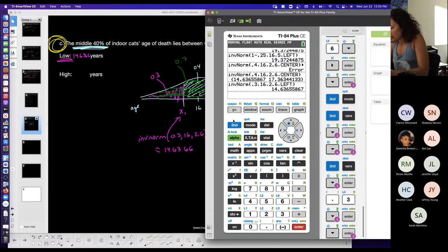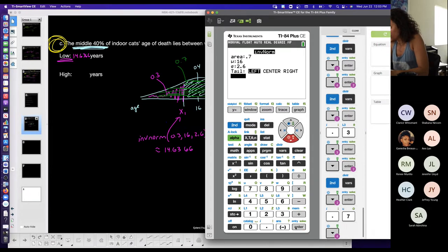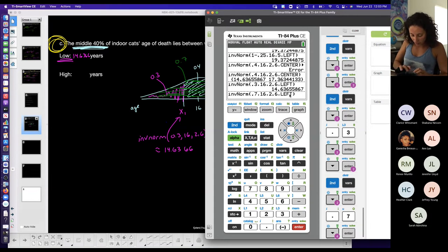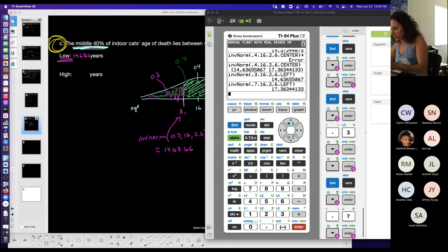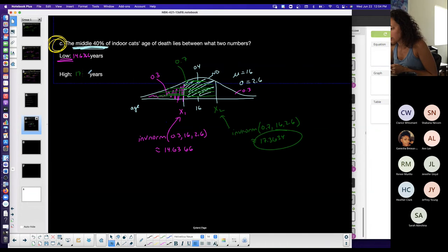You would go inverse norm, second vars, inverse norm. You have to tell it 0.7, and you have to know the order in which to input. 0.7, comma, 16, comma, 2.6. For the app you don't have that, you just have to know the order, but it does tell you before you click on number three. This is 0.7, comma, 16, comma, 2.6. This is 17.3634, and that's my high end.